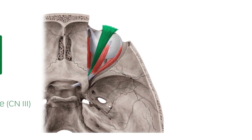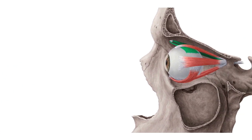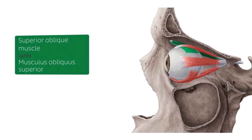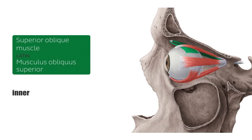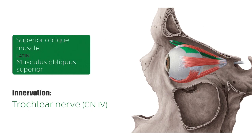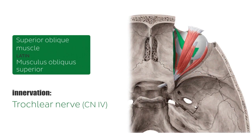The next muscle highlighted in green laterally is the superior oblique muscle, which is innervated by the trochlear nerve, or cranial nerve number four. It originates from the body of the sphenoid bone, passes through the trochlear, and inserts in the posterolateral part of the sclera. The contraction of this muscle abducts, depresses, and medially rotates the eye. Here you can also see a superior view of the superior oblique muscle.